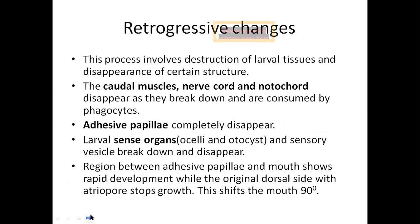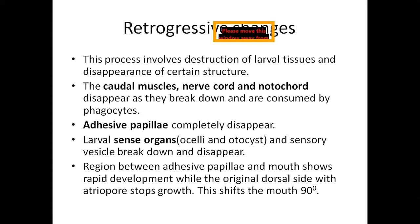Which are the retrogressive changes? In retrogressive metamorphosis, there is destruction of the larval structures. The notochord and the caudal muscles — all these were present in the larval form — start breaking down and disappear. The broken-down tissue is eaten up by phagocytes that are present. The adhesive papillae present in the head region of the larva also disappear during the metamorphosis.